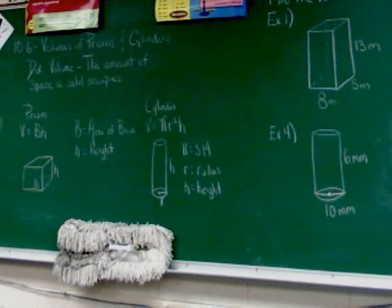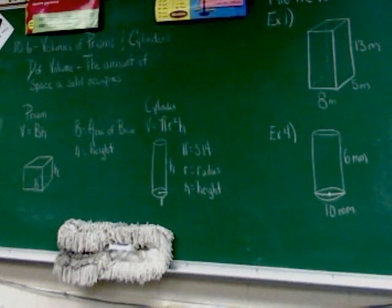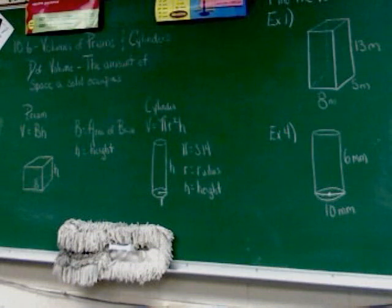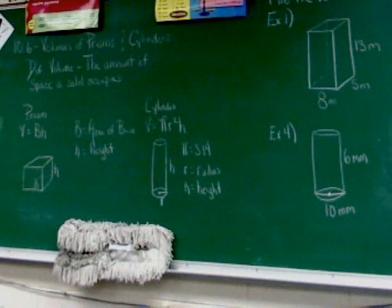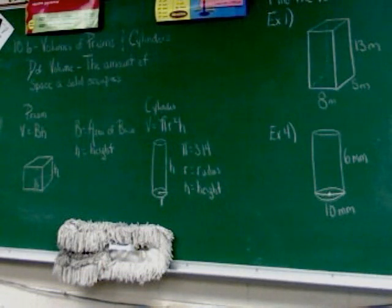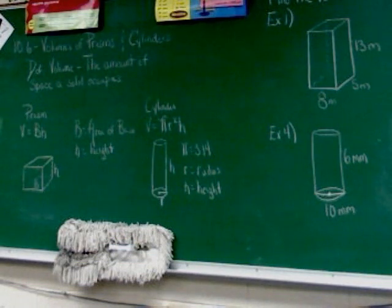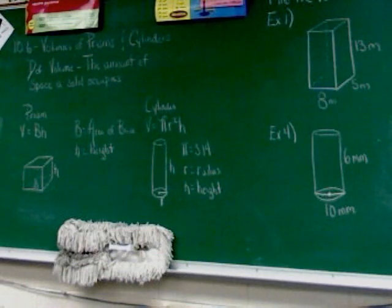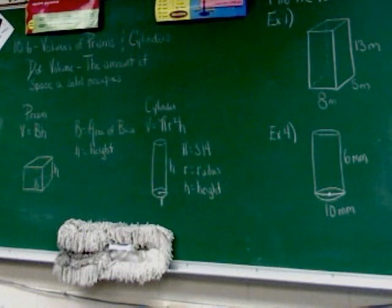Those are things we've already had in formulas. The other formula is volume of a cylinder: pi R squared times H, where pi equals 3.14, R equals the radius, and H equals the height. Those two are things we've all had in formulas already.